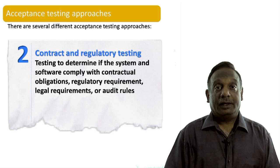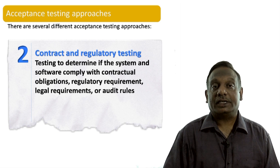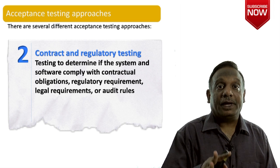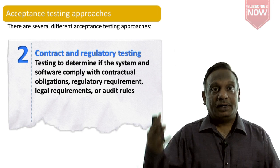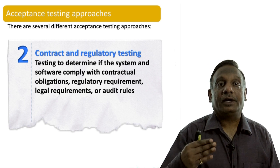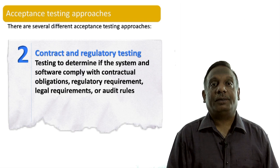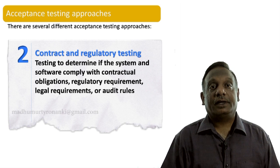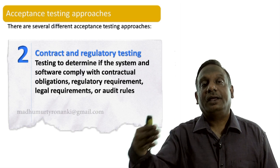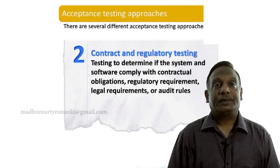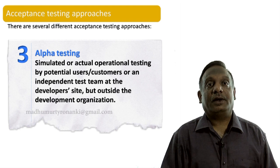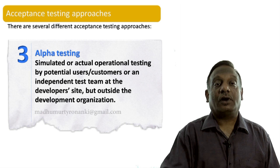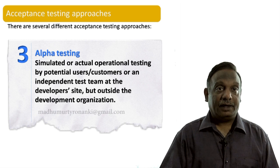Sometimes acceptance testing has to be done by regulatory agencies. This involves testing to determine whether the system and software comply with contractual obligations between the customer and the vendor, as well as regulatory requirements, legal requirements, and audit rules. When this approach is taken, it is called contract and regulatory acceptance testing. In the COTS scenario, instead of UAT, we have two levels: alpha level testing and beta level testing.